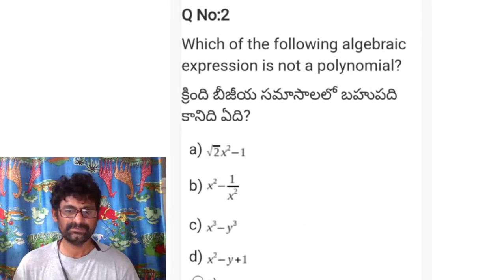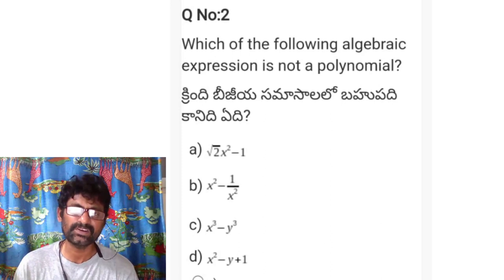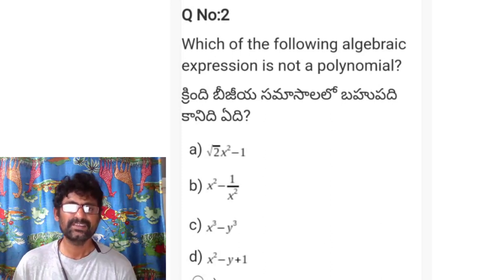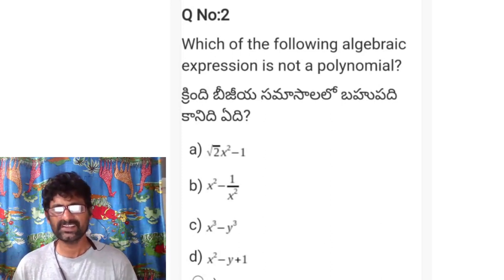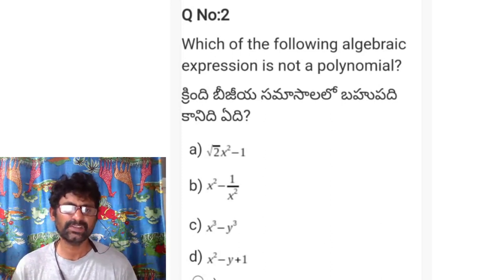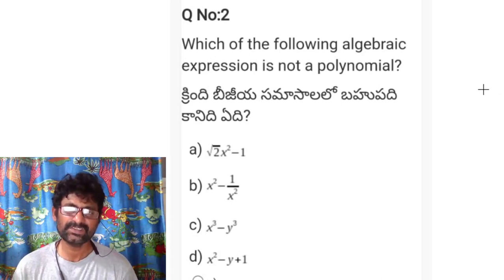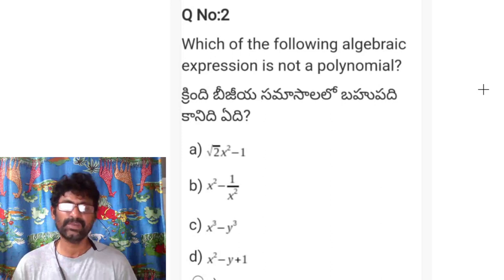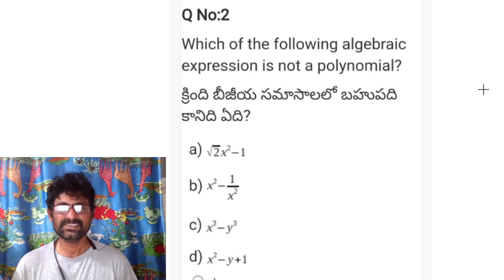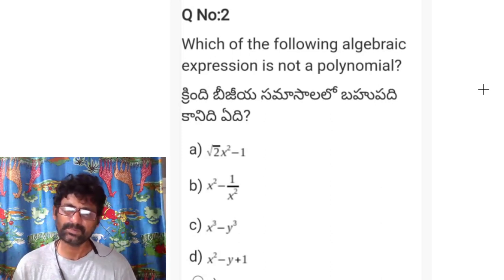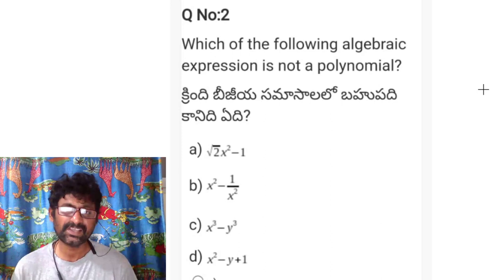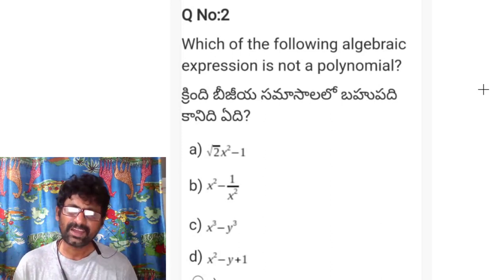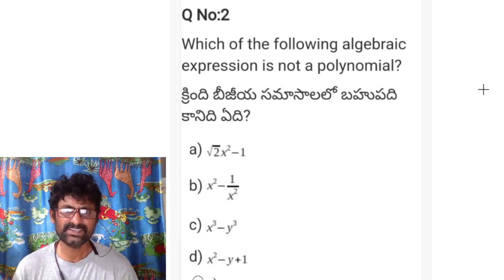Second problem: which of the following algebraic expressions is not a polynomial? A mathematical expression with constants and variables connected with mathematical operators is considered as a polynomial when the variables have non-negative integral exponents.